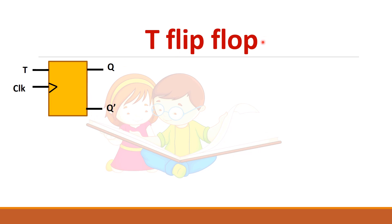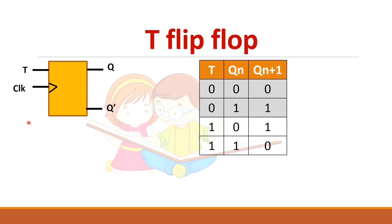To summarize the T flip-flop: when T equal to zero, there is no change in the output. And when T equal to one, the output will toggle.